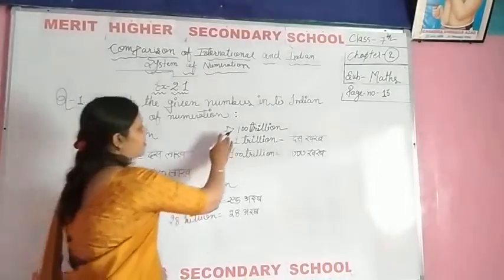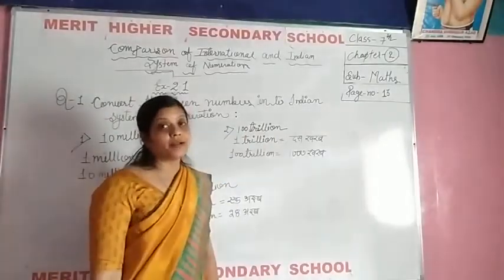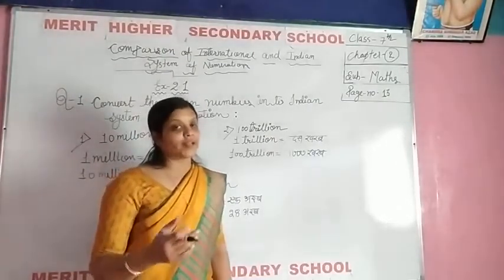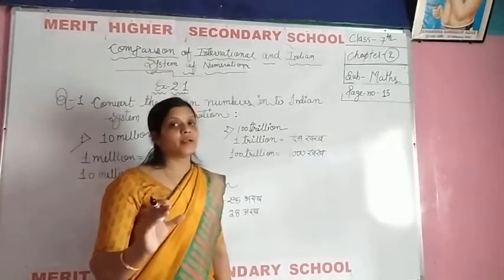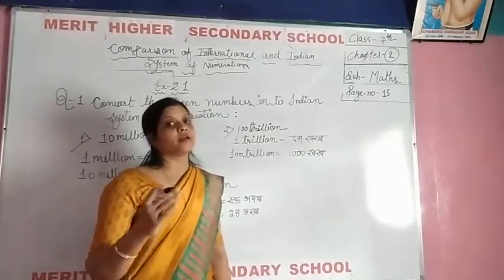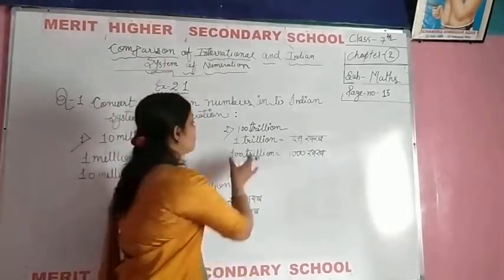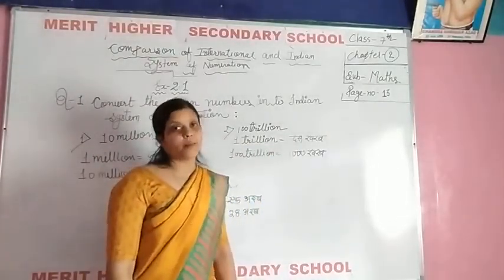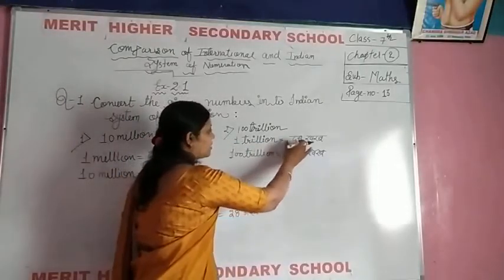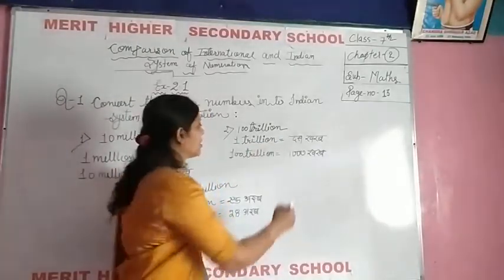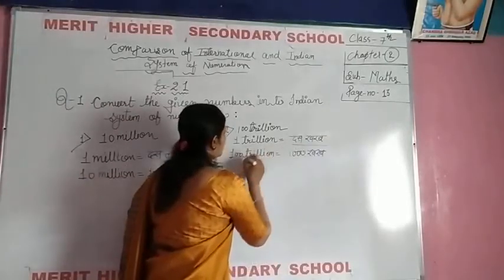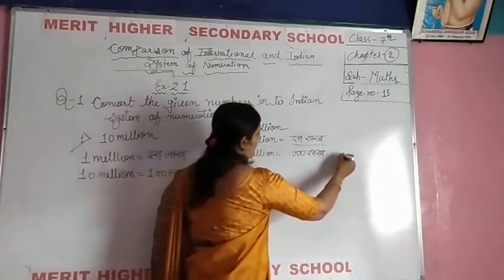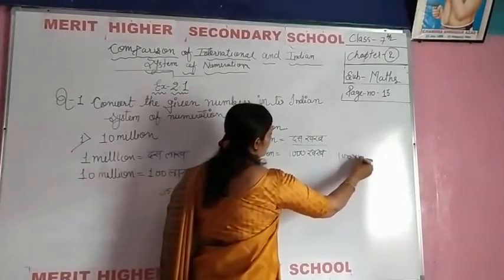Next question: one hundred trillion. I have to find one hundred trillion in the Indian system. Now, one trillion is equal to how much? One trillion equals 10 crore — that is 10 Krav. So when you know one trillion, hundred trillion equals one thousand crore.